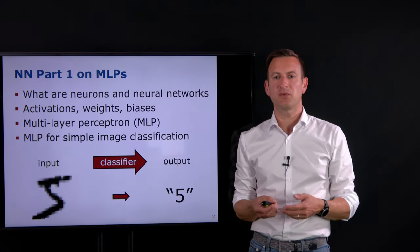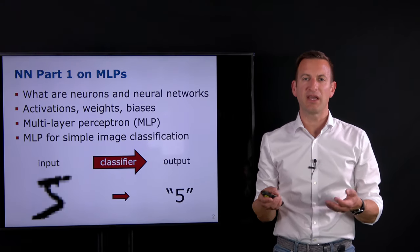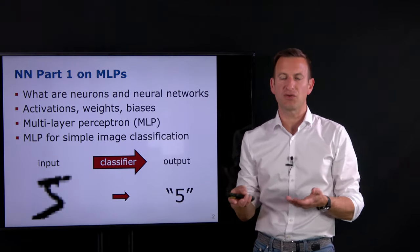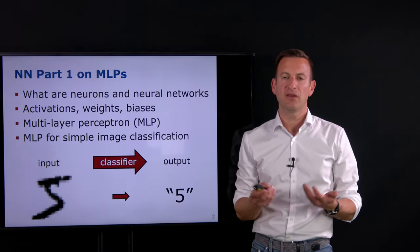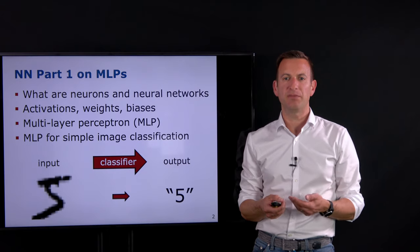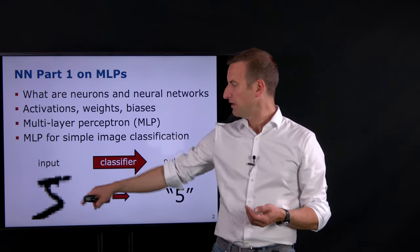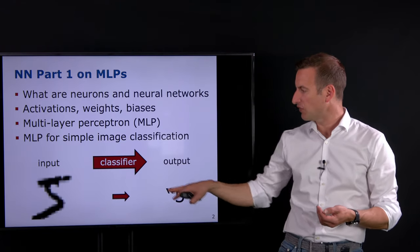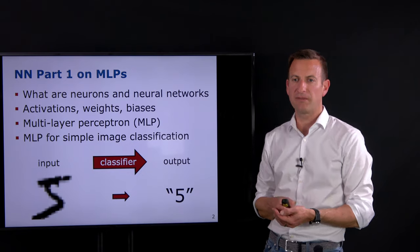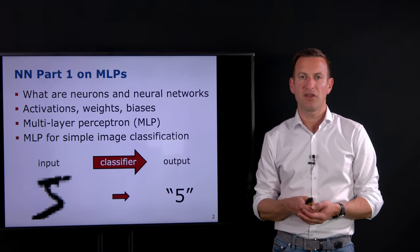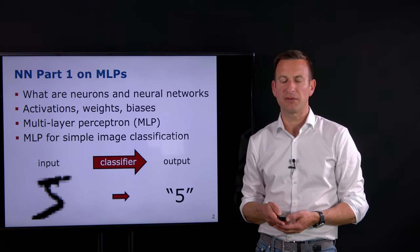In the first part, we looked into the MLP or the multilayer perceptron as the basic neural network, and we discussed things like what's a neuron, what's an activation function, what are weights, what are biases. We then used the MLP for a simple image classification problem, turning input into an output saying that the character we are seeing is a 5, for example. Today we're coming back to this type of problem, but addressing it with a different type of neural network.